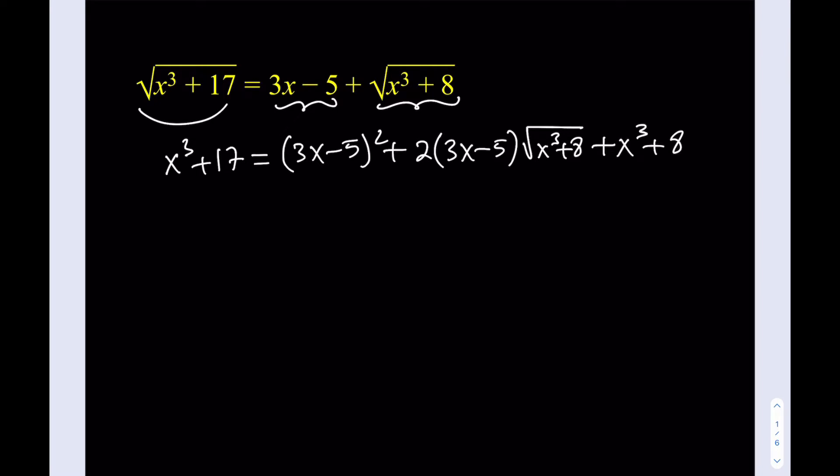And then from here, obviously, you'll be getting something nicer, right? Like, x cubed is going to cancel out. We can expand this, so on and so forth. But let's make sure that we leave the radical alone here. So we kind of get 6x minus 10 multiplied by the radical, and that should equal, 17 minus 8 is going to be 9, and then I'll subtract 3x minus 5 from it. Awesome. Great.